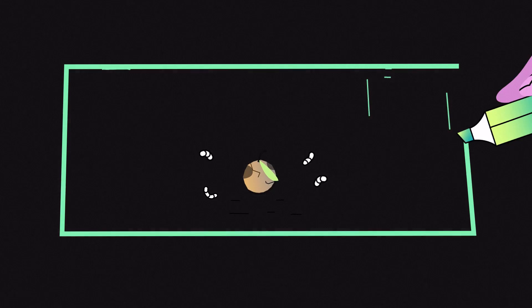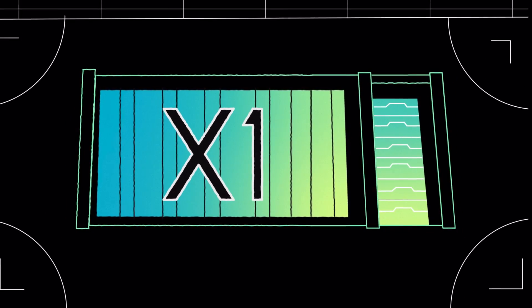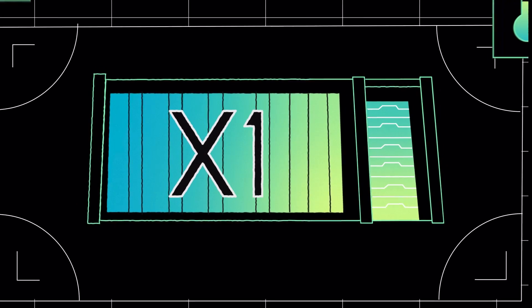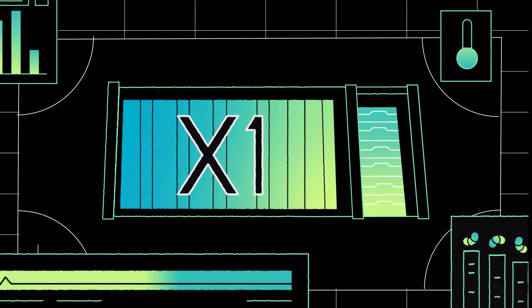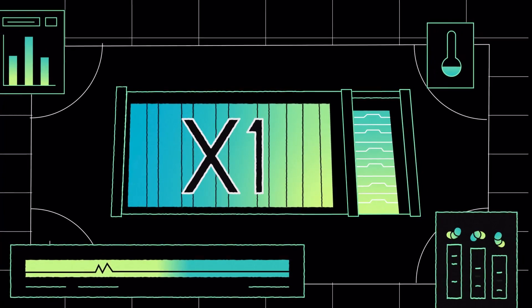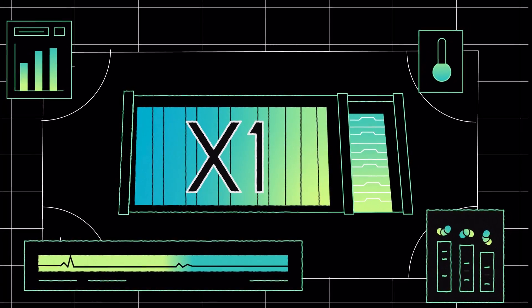And that's exactly what happens inside this container, the Better Origin X1. Food waste is fed to these hungry insect larvae. Our system, powered by AI, takes care of the rest, from feeding to temperature and humidity.